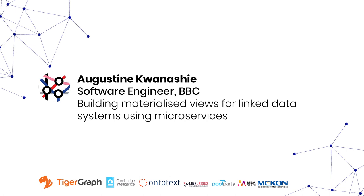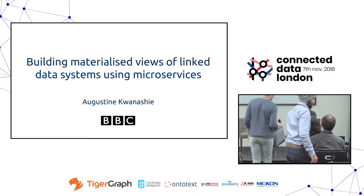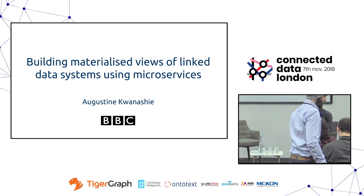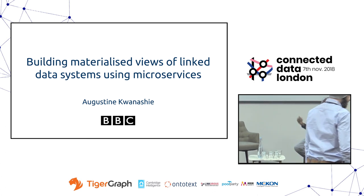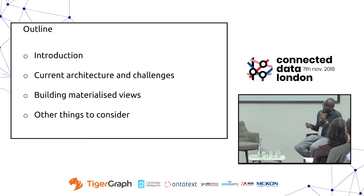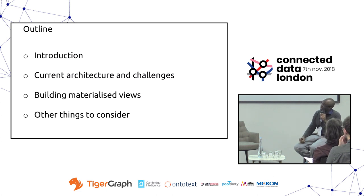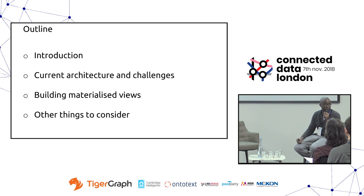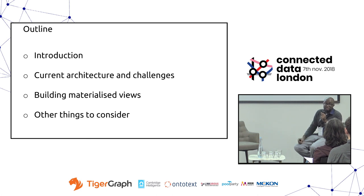I'm a software engineer with the BBC and I'm going to be talking today about some of the work we've been doing in improving the performance and scalability of our content metadata publishing pipeline. I'll give an introduction about one of the use cases in terms of publishing content metadata and distributing it, then an overview of the main architecture and the issues we face in terms of scalability and performance. Then I'll talk about the work we've been doing in building materialized views to deal with those issues, and finally a few things we have to consider as part of this work.